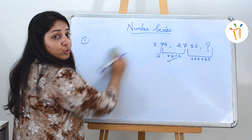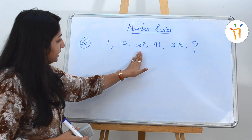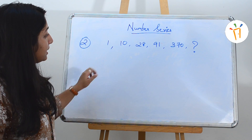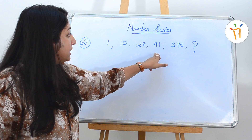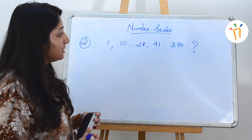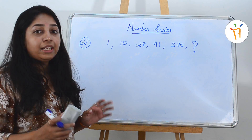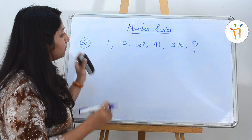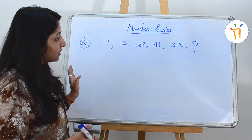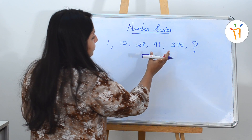Now let's move on to the second type. The second problem is: 1, 10, 28, 91, 370 — find the next number. You can see the fifth number suddenly jumps from 91 to 370, a huge difference. When a series suddenly increases like this, it is a multiplication-type series. In multiplication-type series, it is better to start solving from the right-hand side, so let's start with 370.